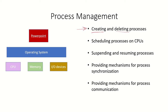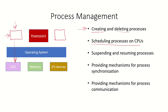Once a process is loaded into main memory, the CPU has to be allocated to it. There will be many processes in the RAM waiting for resources like the CPU. So one of the tasks of the operating system is to schedule processes on the CPU, giving each application CPU time in a fair manner. If a process goes for input/output or is waiting for some event, the process will be suspended. Suspension and resuming of the process is also handled by the OS.